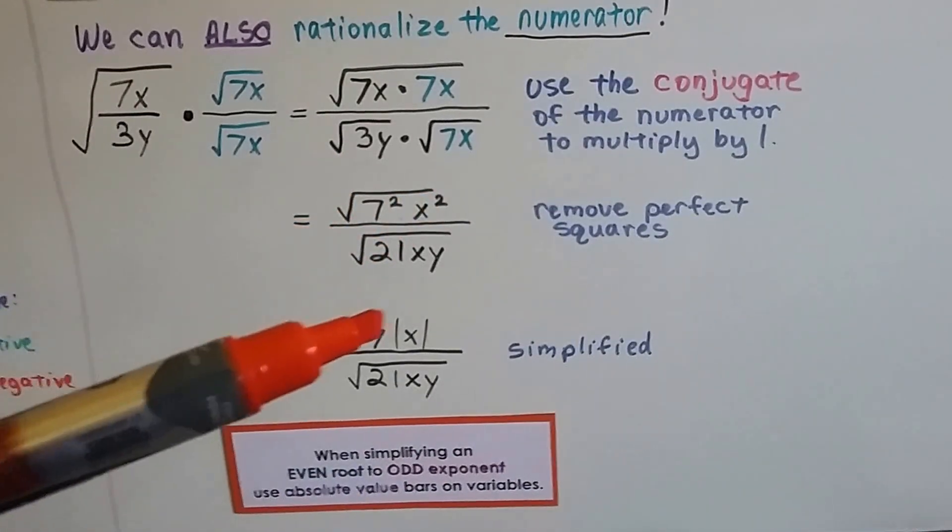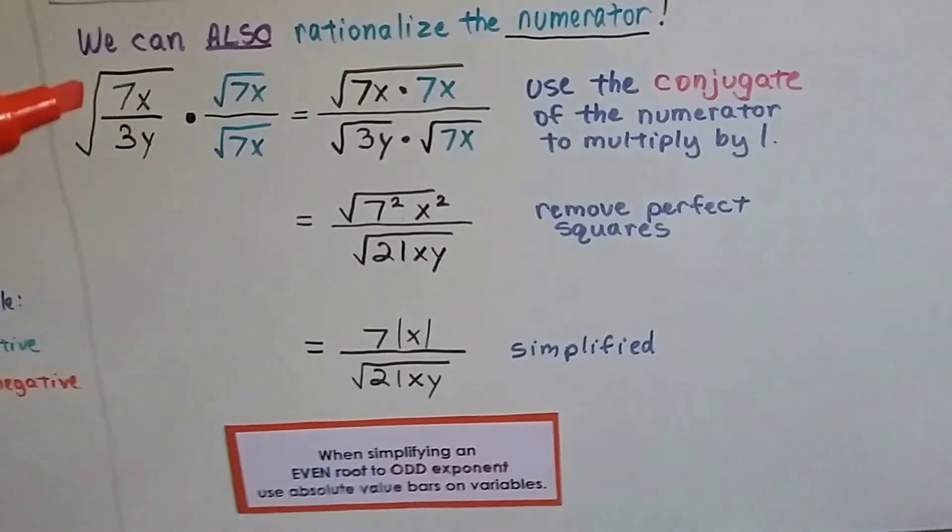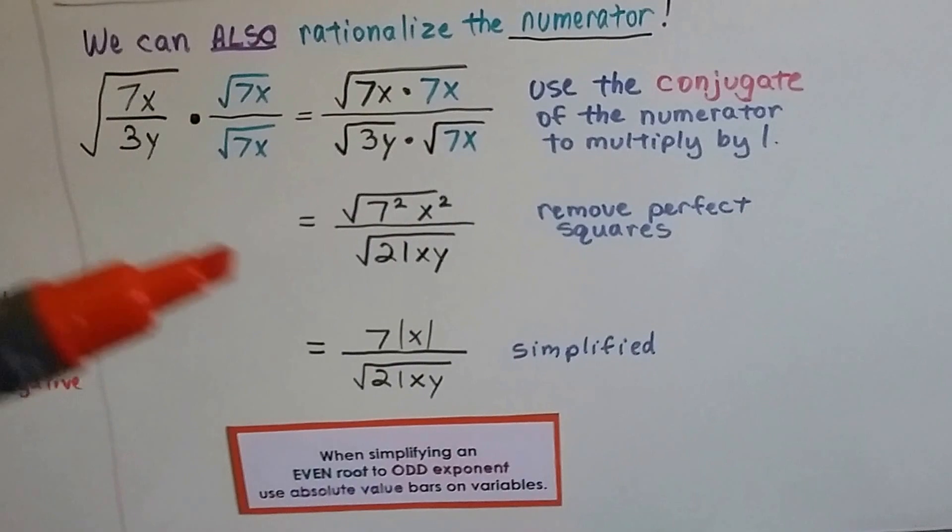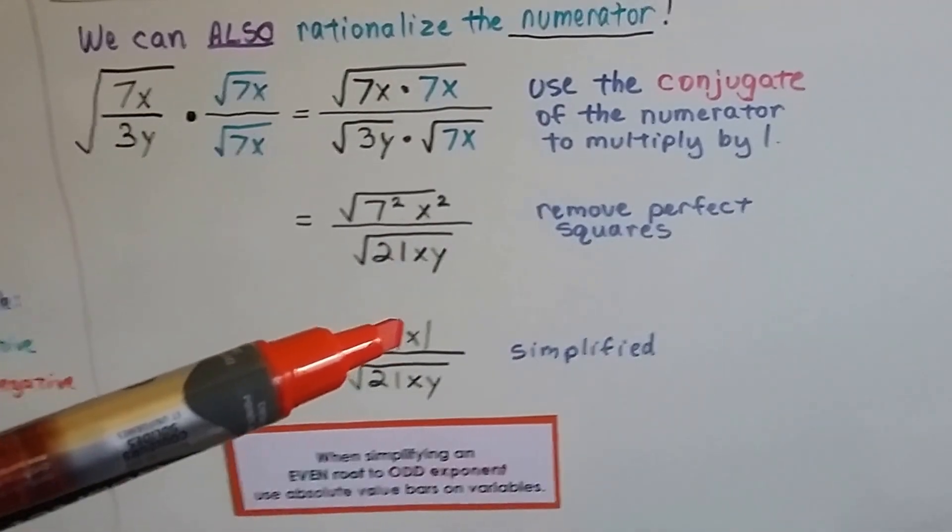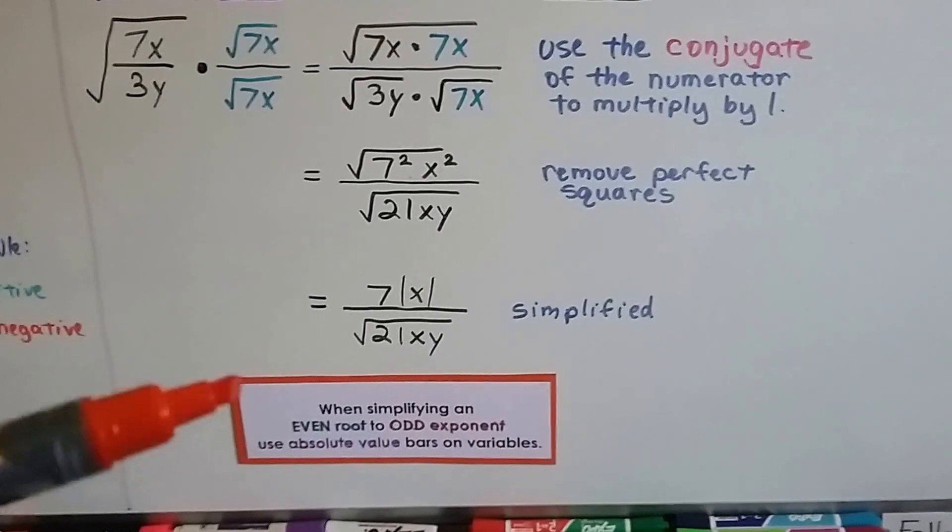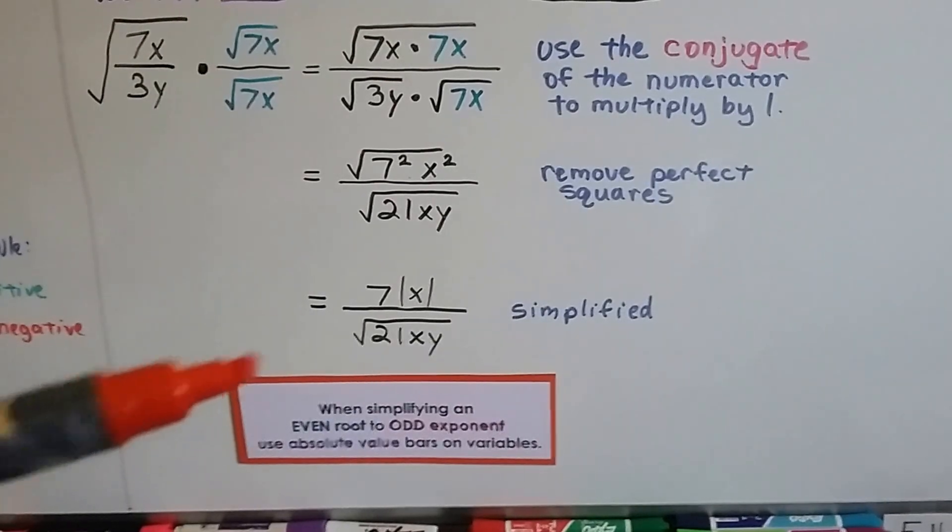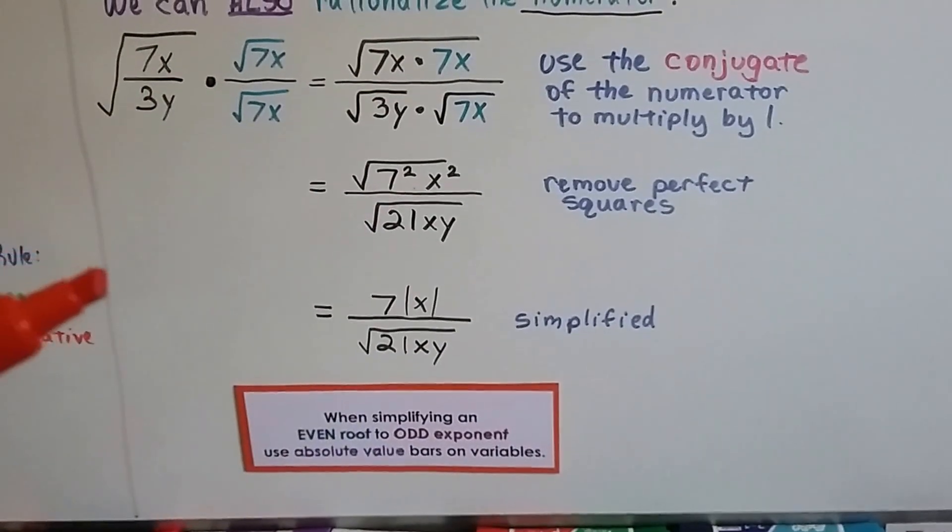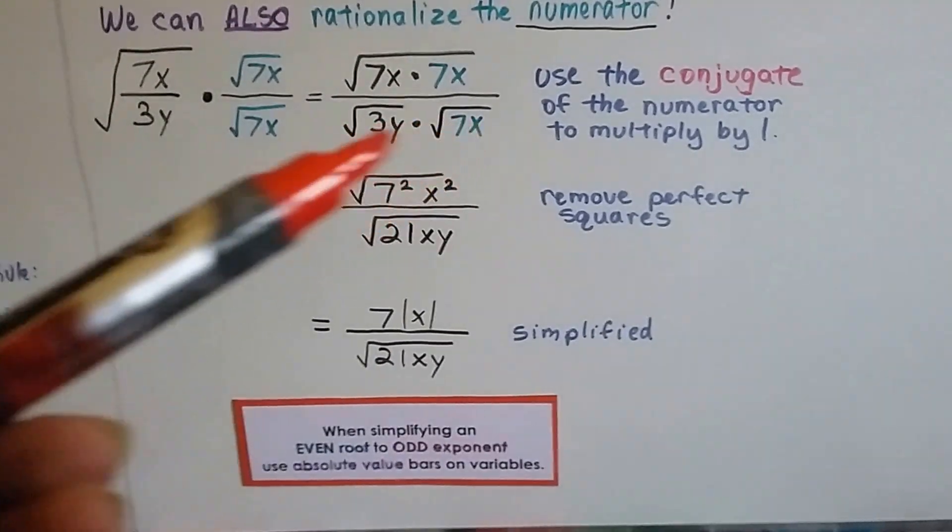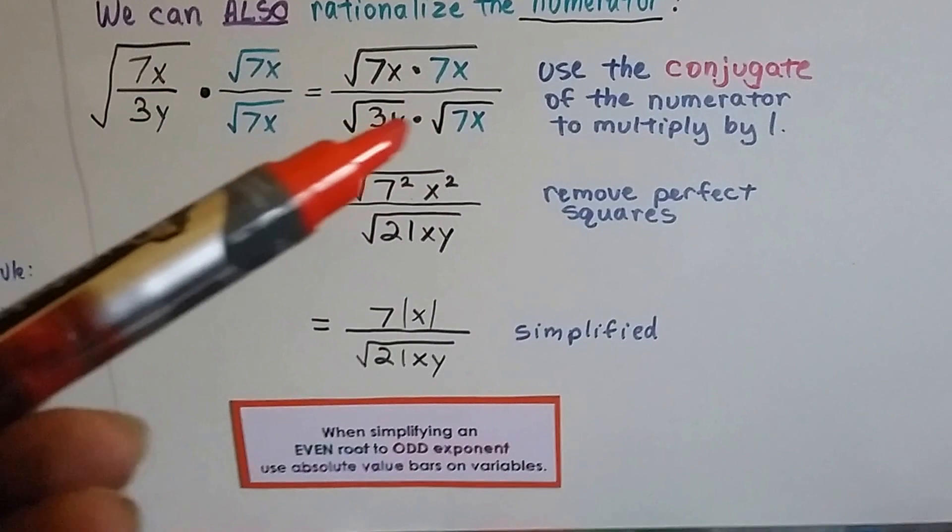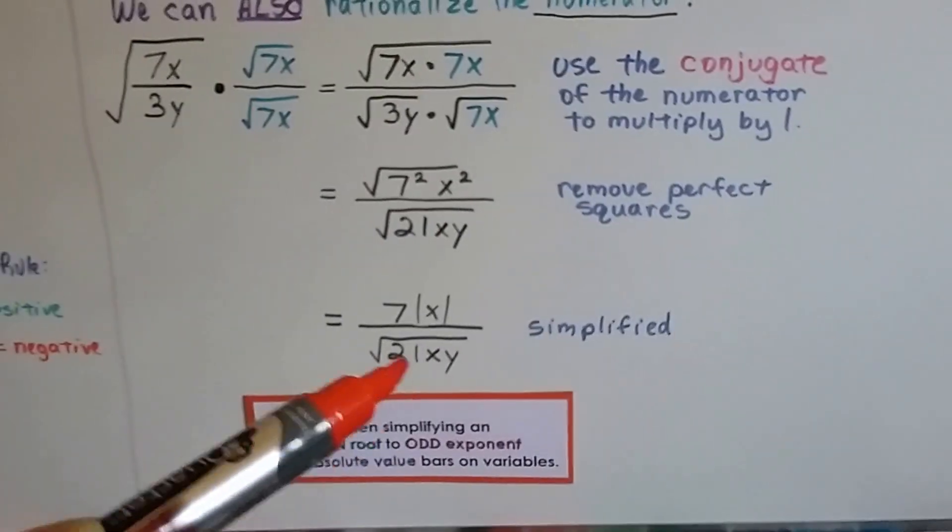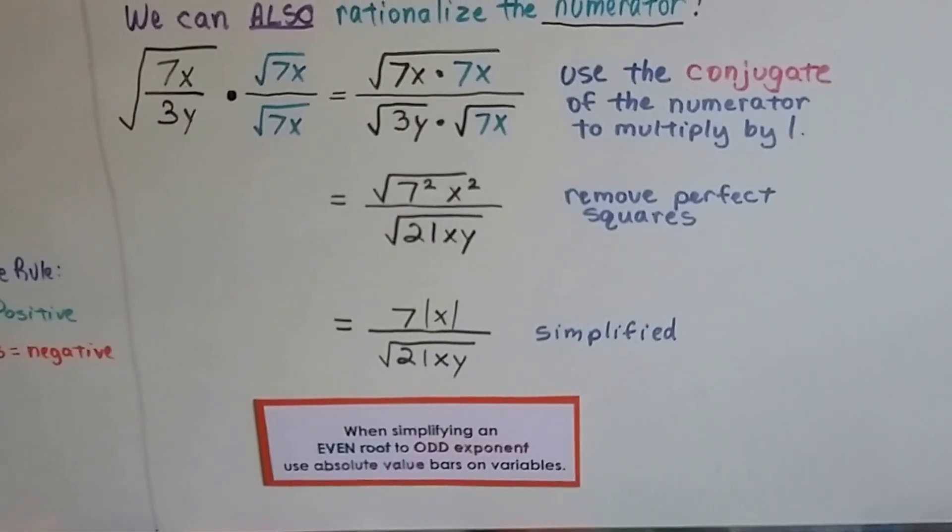And there's a little invisible 2 here for this square root. So it's an even root, and we're simplifying it to an odd power because that x is to the first power. And when simplifying an even root to an odd exponent, we use absolute value bars on the variables. So I've said that a lot in the last few videos. For our denominator, we have 21xy under a square root symbol. And it can't be simplified. That's as far as it goes. So we can also rationalize a numerator.